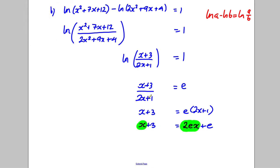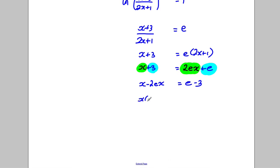I want all x's together on one side of the equation and all numbers together on the other side. So I'm going to subtract 2x from both sides and subtract 3. I'm going to get x subtract 2ex is equal to e subtract 3. Factorize the x and divide by 1 subtract 2e.